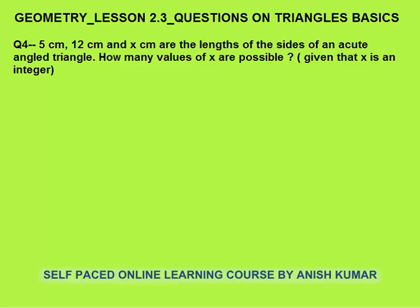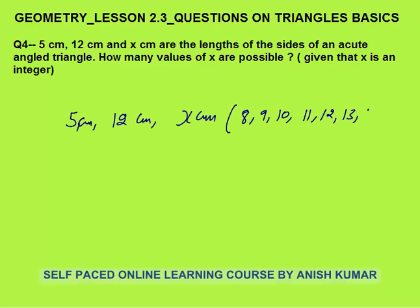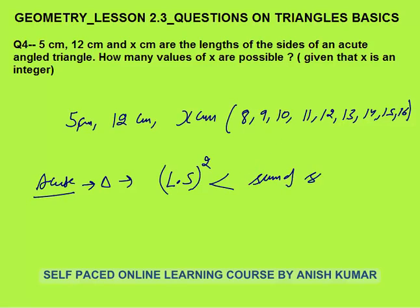A similar question: 5 cm, 12 cm, and x cm are lengths of sides of an acute angle triangle — not just any triangle, but an acute angle triangle. How many values of x are possible? Be very careful in the exam — there is a difference between this question and the previous one. In the previous question we only needed to make a triangle; here we must make an acute angle triangle. The possible values of x we found were 8, 9, 10, 11, 12, 13, 14, 15, and 16.